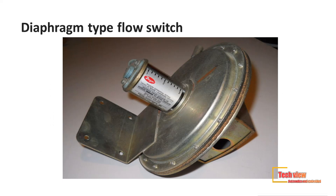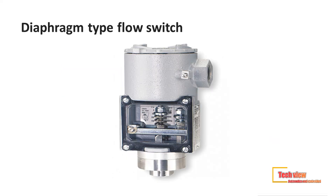The next type is the diaphragm type flow switch. In construction, diaphragm type flow switches are similar to DP switches. The only difference is that there is a gap that allows fluid to flow through the transition between the inlet and the outlet port, while it is completely closed in DP switches.